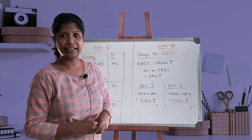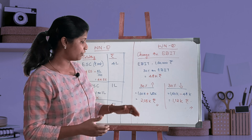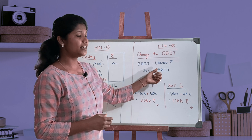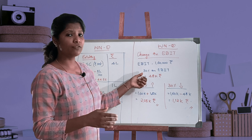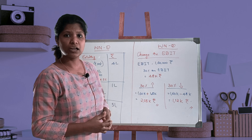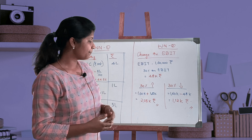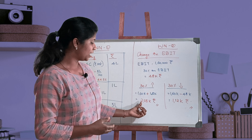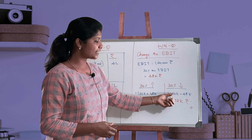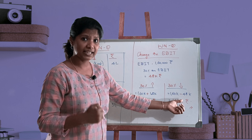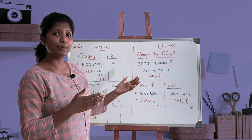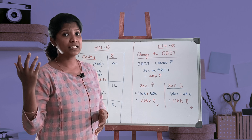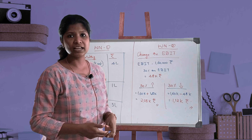Moving on to the change in EBIT — the question talks about a 30% change, so we need to find both increase and decrease. The EBIT given in the question is 1,60,000 rupees. 30% on 1,60,000 gives 48,000 rupees. For a 30% increase: 1,60,000 + 48,000 = 2,08,000. For a 30% decrease: 1,60,000 − 48,000 = 1,12,000 rupees.